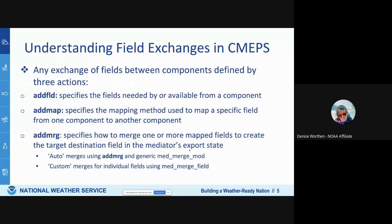One of the main features — really the reason to have a mediator — is that it acts to exchange fields between components. For CMEPs, there are three steps needed. First, you have to add the field to a list of fields that CMEPs knows it needs to exchange. Second, you need to tell CMEPs how to map that field from the source component to the destination component. Third, you tell CMEPs how to merge it into the export state going to the destination component, either via auto merge using the generic add-merge feature, or a custom merge.